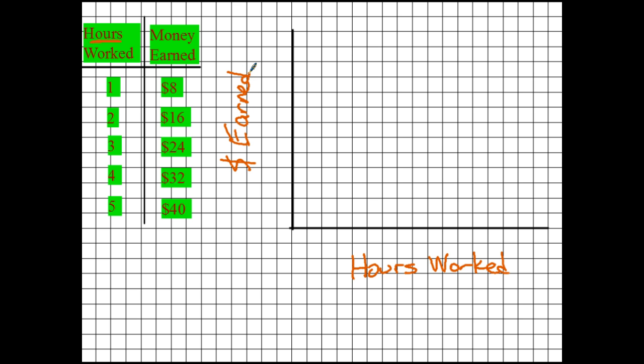Now I'm going to set up the scale. I'm going to put in one increment per hour since we're only going up to five, and I've got all these squares. Let me count — I count about seventeen squares across, so I'll use every three squares to represent one hour. That gives me increments of one, two, three, four, five along the x-axis.